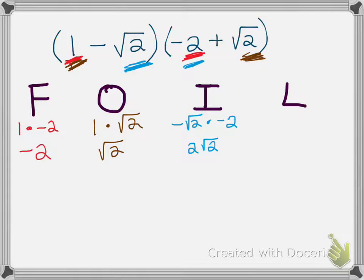And then my last, of course, is going to represent the last two terms we haven't touched yet, which is that negative square root of 2 and the positive square root of 2. So those are the two things that we're multiplying: negative square root of 2 times positive square root of 2.